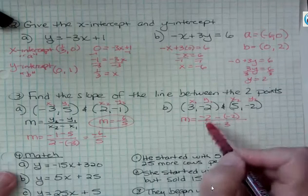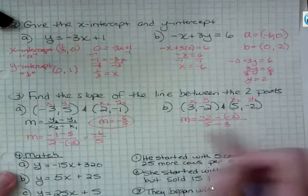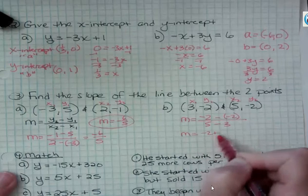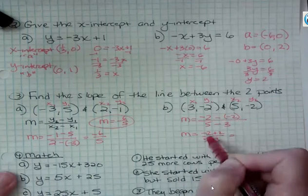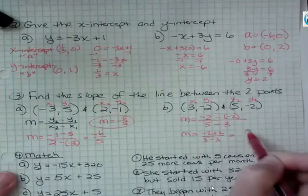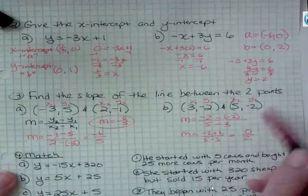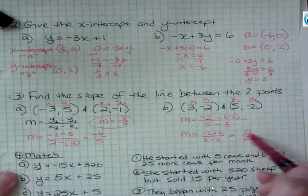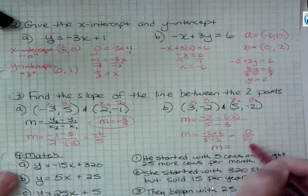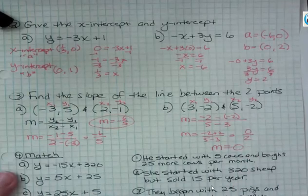Well, negative 2 minus 2 is actually negative 2 plus 2, right? And so negative 2 plus 2 is 0 over 2. And we've seen this before. Whenever you have a slope that has a 0 in the numerator, we know that 0 divided by anything is 0. So the slope is 0.